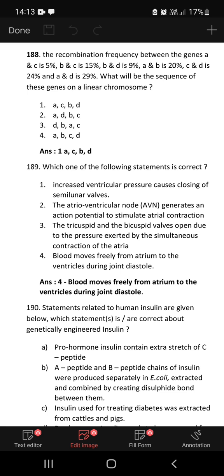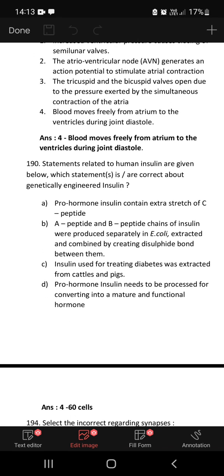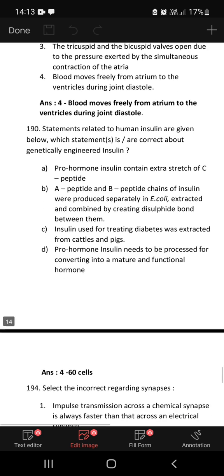Which one of the following statement is correct? Increased ventricular pressure causes closing of semilunar valves, this is wrong. Atrioventricular node generates an action potential, this is also wrong, it is SAN. The tricuspid and bicuspid valves open due to the pressure exerted by the simultaneous contraction of the atria, that is also wrong. Blood moves freely from atrium to the ventricles during joint diastole. This is the correct statement.